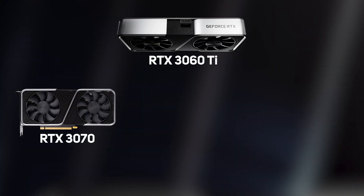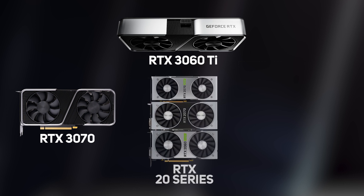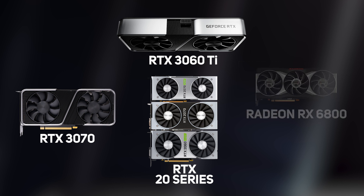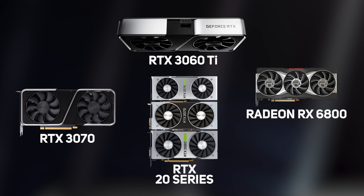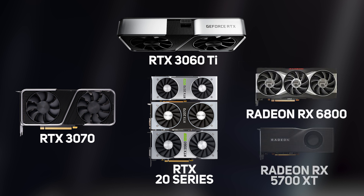We put the GeForce RTX 3060 Ti card through its paces up against the higher spec RTX 3070, plus the three closest price cards from the previous generation GeForce RTX 20 series — that's the 2070 Super, 2070, and 2060 Super — plus the AMD Radeon RX 6800 and RX 5700 XT.